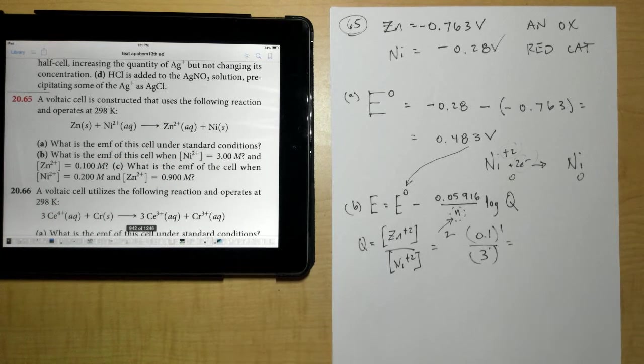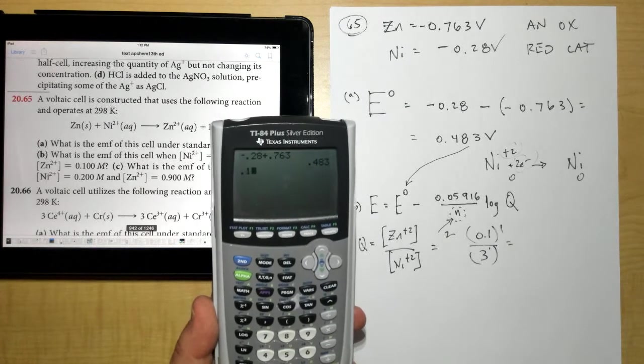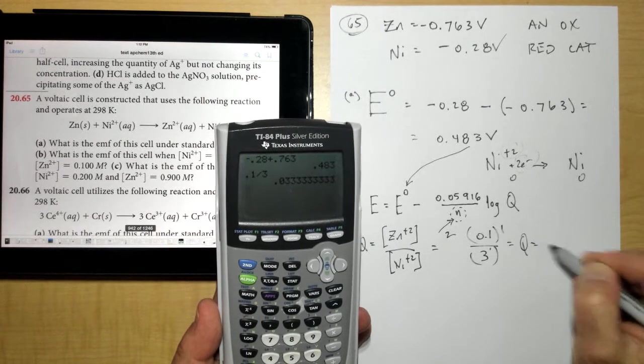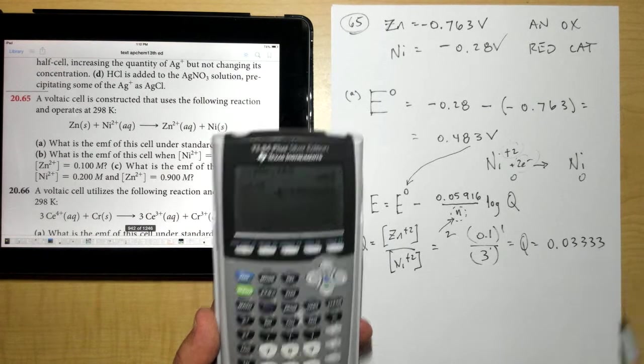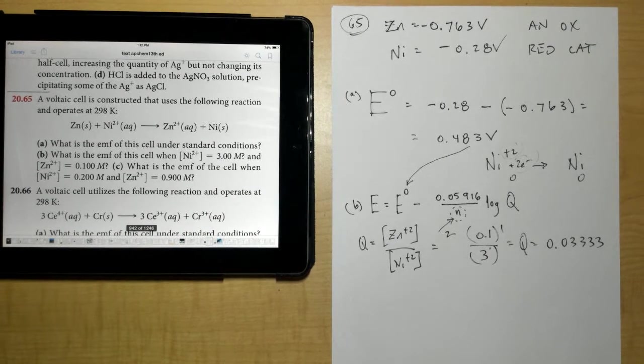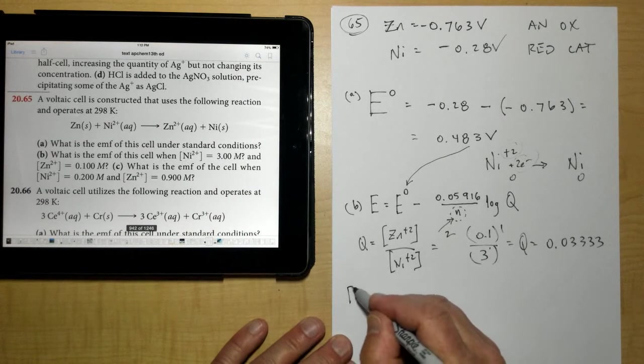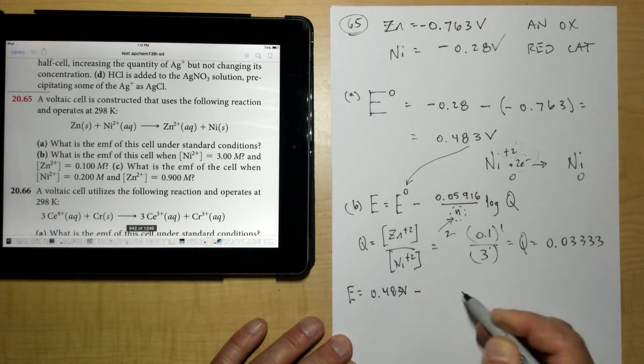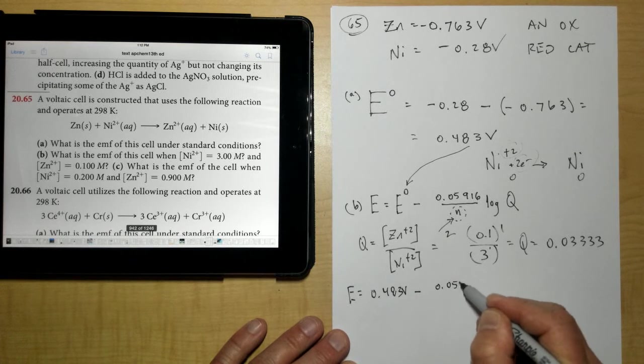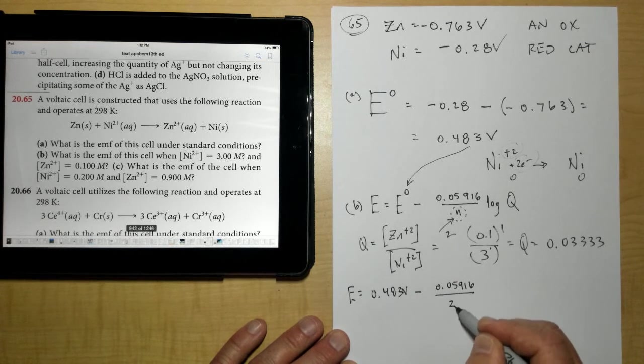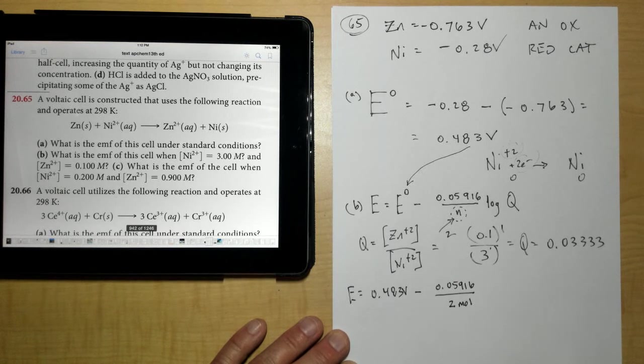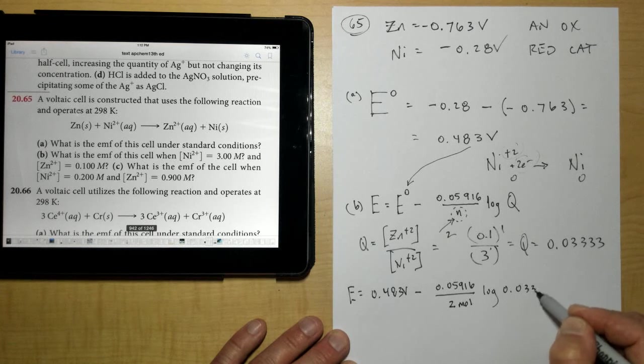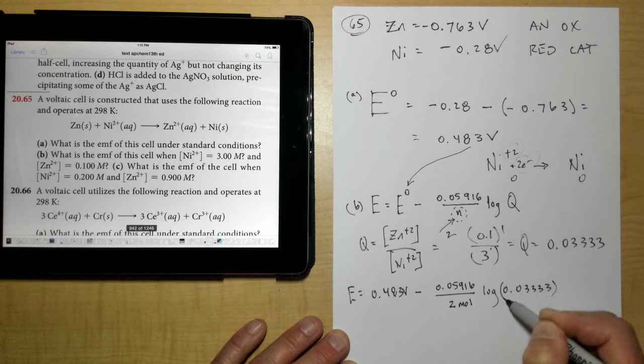So let's try that, so then we have that number, 0.1 divided by 3, and I have Q now equaling 0.0333 repeating. Does that look right so far? Now let's go ahead and let's write the whole equation out. E is equal to my 0.483 volts minus 0.05916 divided by the number of moles of electrons transferred, which is 2, times the log of 0.03333 repeating. Okay?